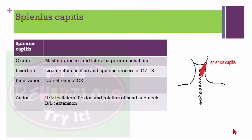Splenius capitis muscle: originates from the mastoid process and the lateral superior nuchal line, and inserts into the ligamentum nuchae and the spinous process of C7 to T3. Innervation from the dorsal rami of C2. If working unilaterally: same-side lateral flexion and rotation of the head and neck. If working bilaterally: extension of the head and neck.